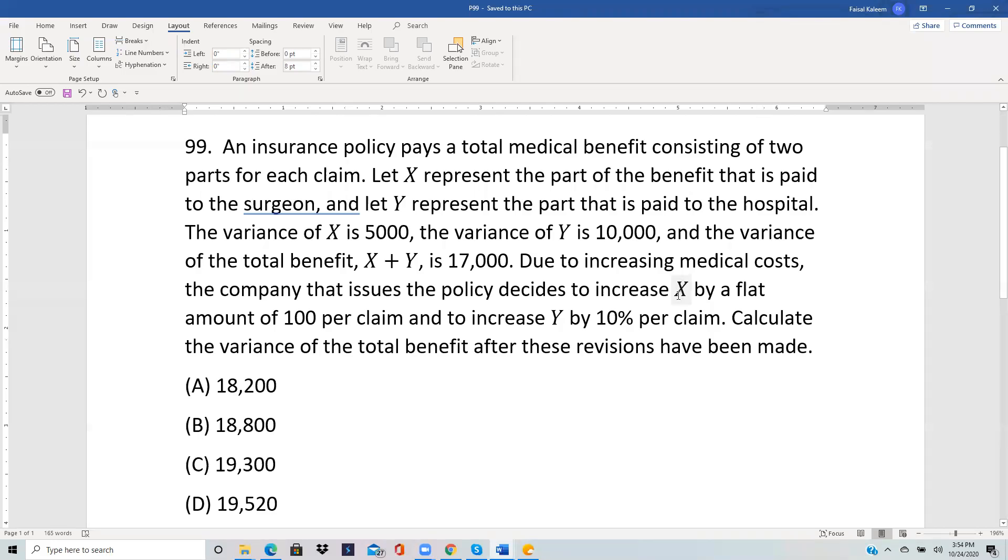An insurance policy pays a total medical benefit consisting of two parts for each claim. X represents the part of the benefit that's paid to the surgeon and Y represents the part that is paid to the hospital.